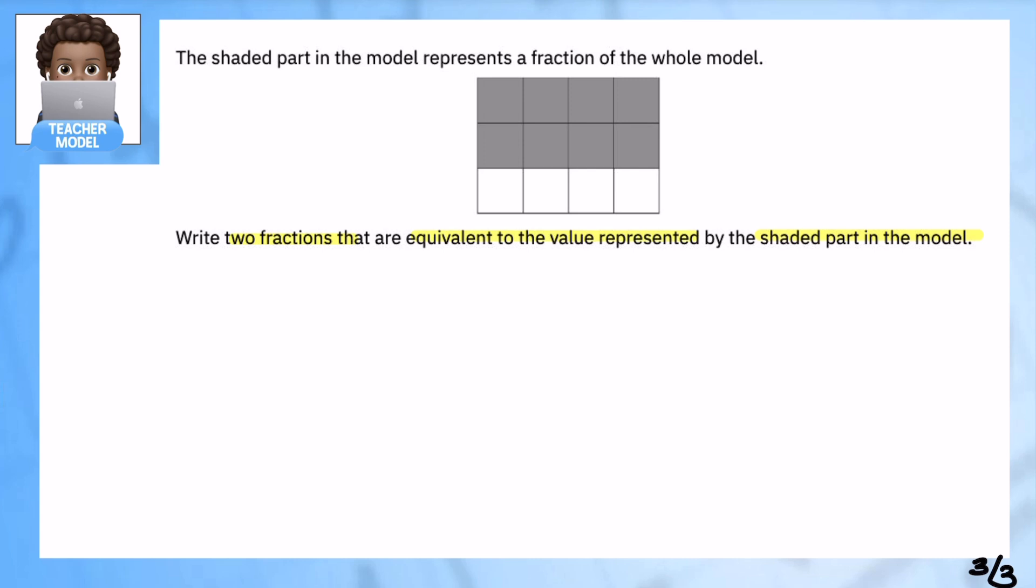The first way: honestly, do not make this more complicated than it needs to be. What does the model show? The model is very easily a shaded part out of all the parts. I have eight shaded parts out of 12, so that's one easy way. We do not have to complicate this by making it harder than it needs to be.